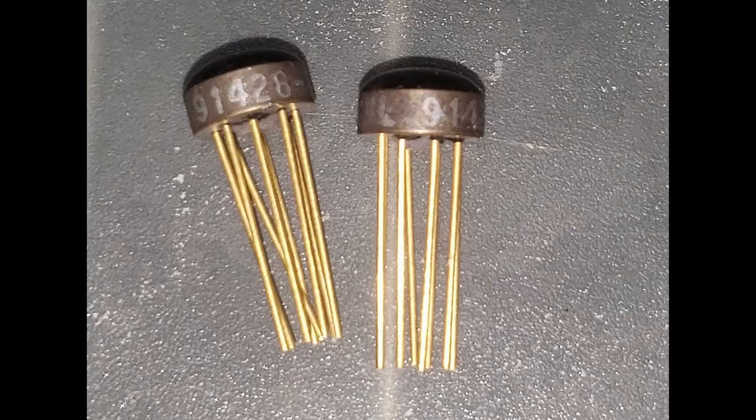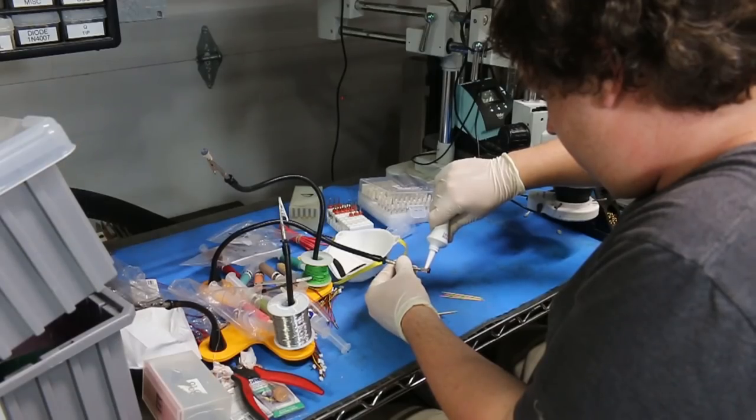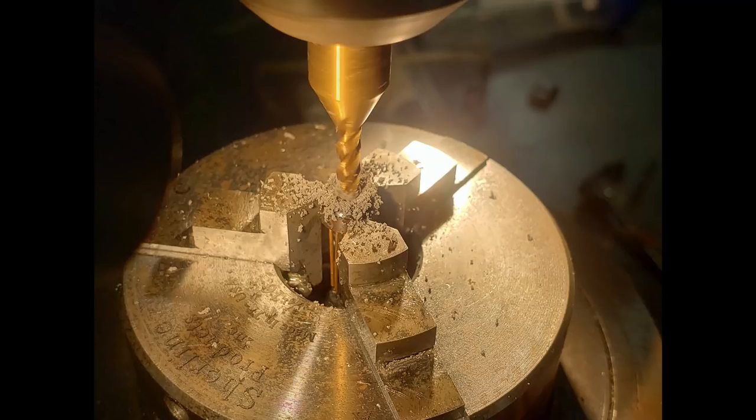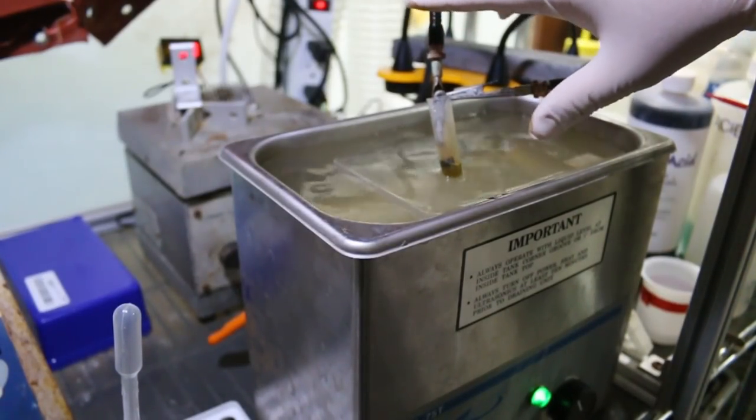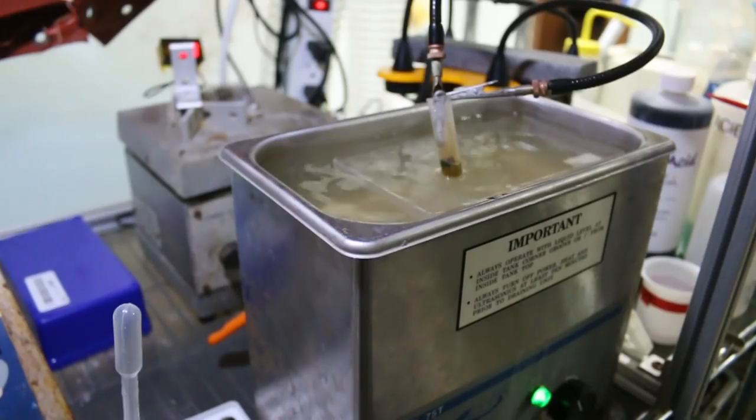If I had to decap another TO99, I would do the following. One: Cover pins in silicone. Two: Mill center cavity or entire surface flat. Three: Submerge top in warm WFNA, sonicating and checking at 15 minute intervals until all epoxy is removed.